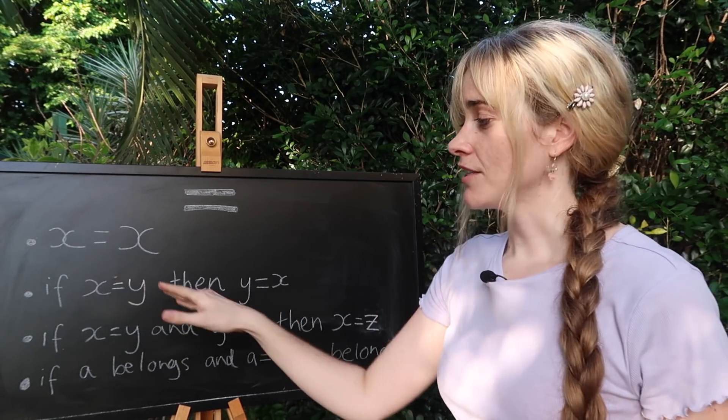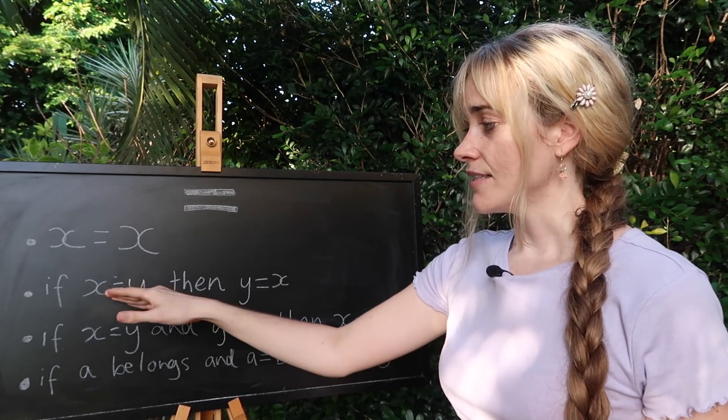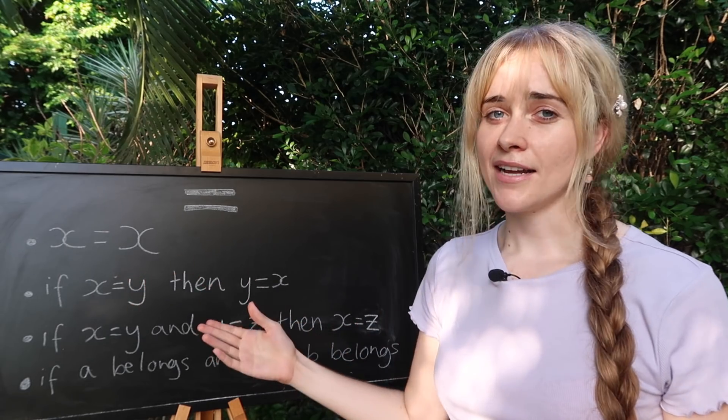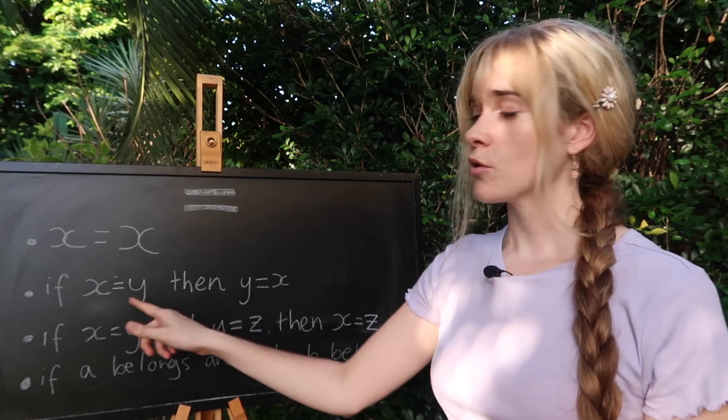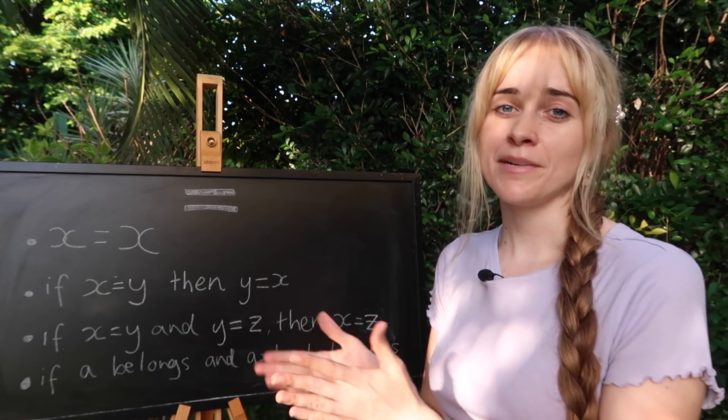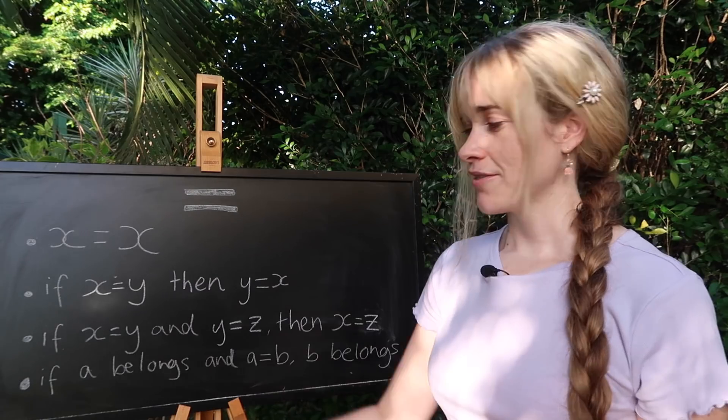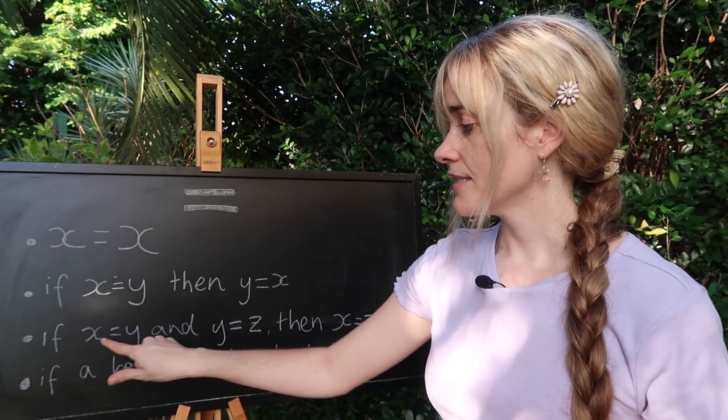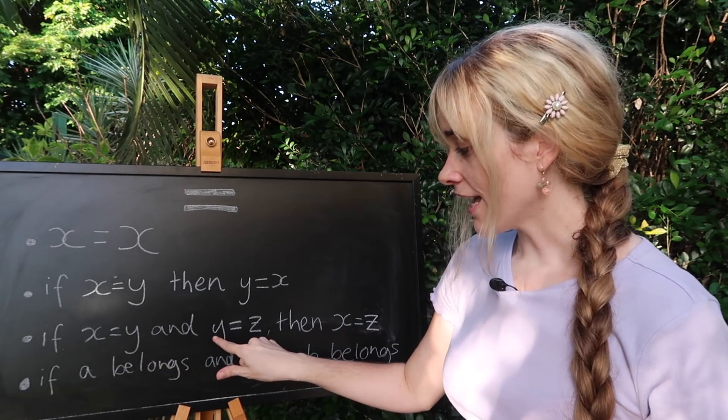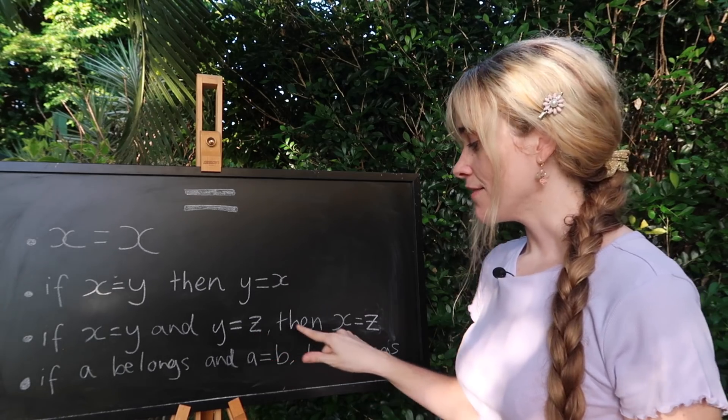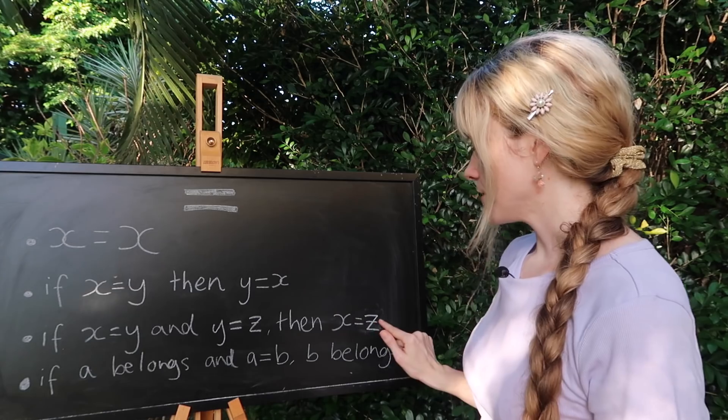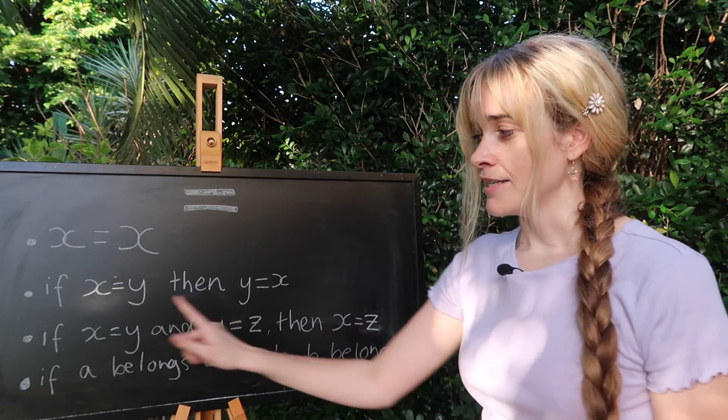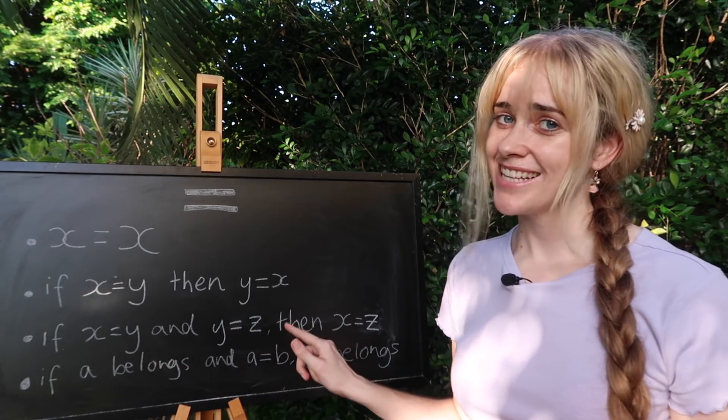It doesn't matter if you're on the left or the right side of this equal sign. Whatever is on one side is equal to what's on the other. In math we would call this symmetric. It's a mirror image of itself. Our third rule is that if x is equal to y and y is equal to z then following our logic here x is going to be equal to z. In math we would call this transitive.